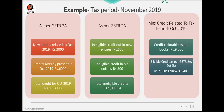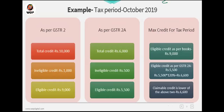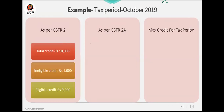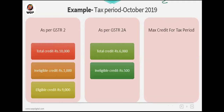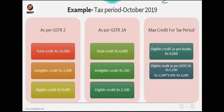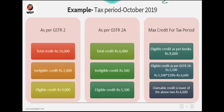To summarize the multi-period example: for October, eligible credit per books was 9,000. GSTR 2A eligible was 5,500, 120% of that is 6,600 — lower than books, so 6,600 claimed. In November, new October invoices of 2,000 appear. Total October credit becomes 8,000, total ineligible 1,000, eligible 7,000. 120% of 7,000 is 8,400. Lower of 9,000 and 8,400 is 8,400. Since 6,600 was already claimed, eligible credit for November pertaining to October is 1,800.